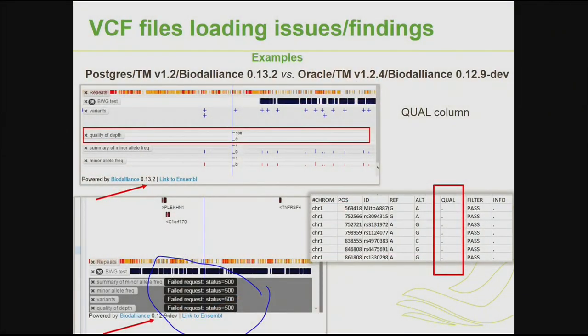Here is an example of how two different versions of Dalian's genomic browser work. There was a VCF file where the quality column was not populated, and it was okay to load this file in BioDalian's 0.13. Unfortunately, it was impossible to load it in an earlier version of the BioDalian's genome browser, so we had to populate that field in order to work with that version.